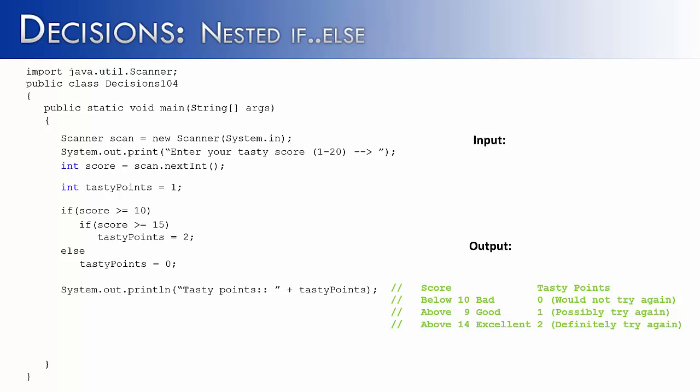I've nested an if statement inside my if-else statement. Let's see how this runs with input 5. 5 is not greater than or equal to 10, so it's false and goes to the else statement. The else statement would change tasty points from 1 to 0. Then we print tasty points, which should say 0. But interestingly, this is going to say 1. Why is that happening?